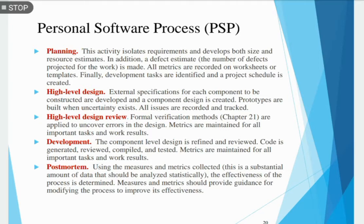The fourth framework activity is development. The component-level design is refined and reviewed, code is generated, reviewed, compiled, and tested. The fifth activity is postmortem — using the measures and metrics collected, the effectiveness of the process is determined. Measures and metrics should provide guidance for modifying the process to improve its effectiveness. PSP stresses the need for the software engineer to identify errors early and to understand the type of errors they are likely to make.